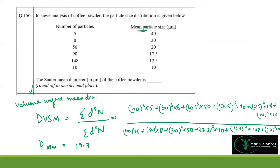The result is 19.765 micrometers. Rounded off to one decimal place, the answer is 19.8 micrometers.